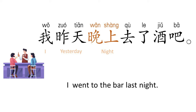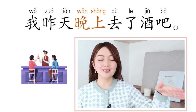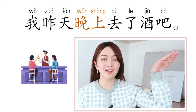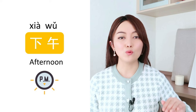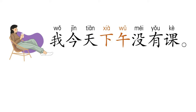去 is 'to go', and the function word 了 indicates the past, so 去了 means 'went.' 酒吧 is 'bar.' So: I, yesterday, night, went, bar. 我昨天晚上去了酒吧.